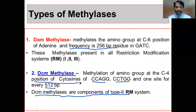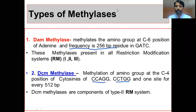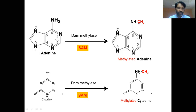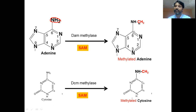Now we will see the reaction. DAM methylases methylate the amino group at the N-6 (C-6) position. This is adenine — counting positions 1 through 6 — and at C-6 there is an amino group. So DAM methylases methylate the amino group at the C-6 position of adenine, producing a methylated adenine.